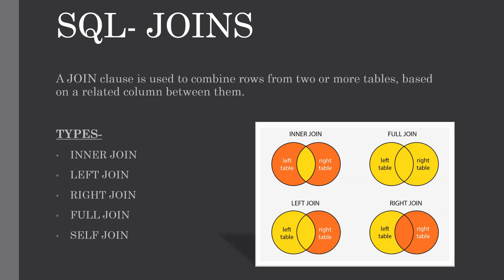Hello everyone, welcome to my channel. In this tutorial I'm going to explain what joins are in SQL, its different types, and how to use them with some simple examples. The SQL joins clause is used for combining records from two or more tables in a database. A join is a tool for combining fields from two tables by using the common values present in both tables.